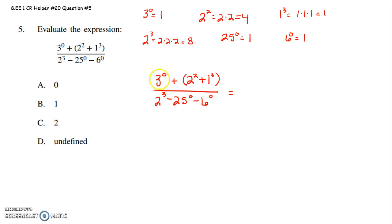And I'm going to go ahead and just substitute each of these values in. Again, 3 to the 0 is 1 plus, within parentheses, 2 to the 2nd is 4 plus 1 to the 3rd is 1 over 2 to the 3rd is 8 minus 25 to the 0 is 1 minus 6 to the 0 is 1.